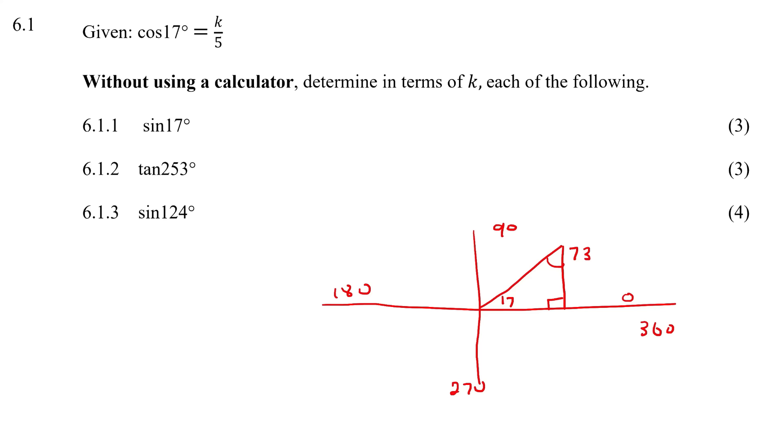6.1.1 calculate sin 17°. So SOHCAHTOA. We know that sin is opposite over hypotenuse. You could also use the whole x, y, r method. There's so many different methods, use whatever's comfortable for you.